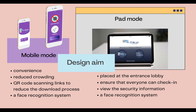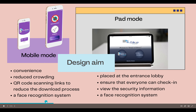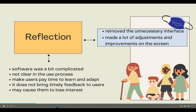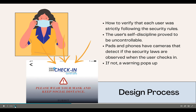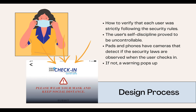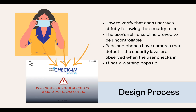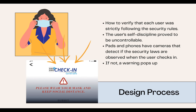Both pad and mobile modes use a face recognition system to alert users who do not follow the security rules. In my design process, I was troubled by how to verify that each user was strictly following the security rules. The approach I first used was a small questionnaire to test users — do you really wear a mask? Do you follow social distancing? But after a few times, users' self-discipline proved to be uncontrollable. I finally chose to implement a face recognition system.